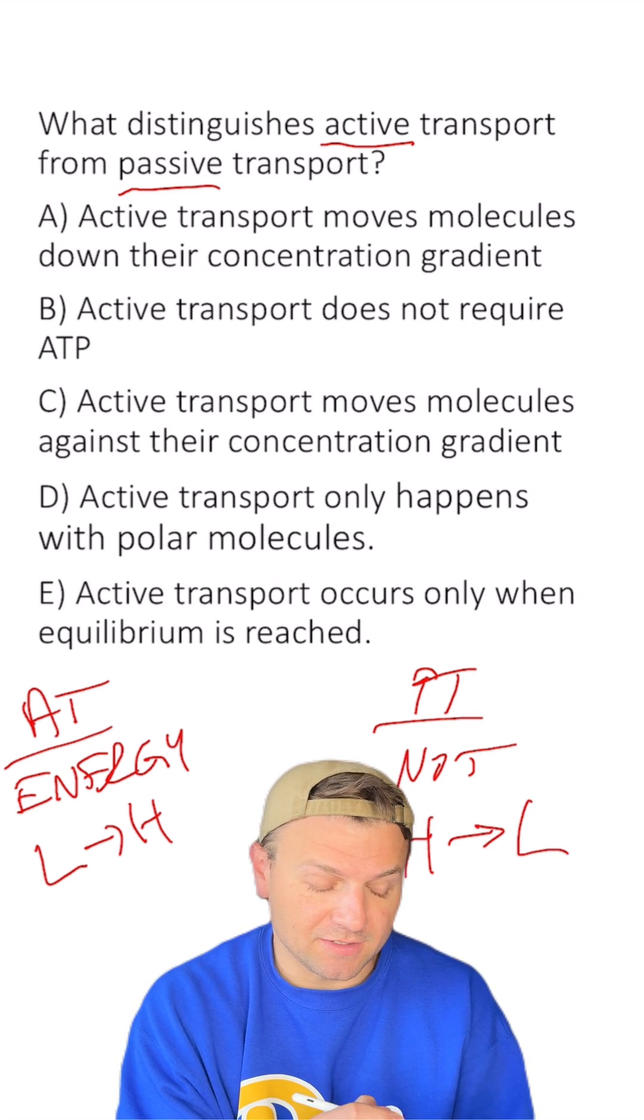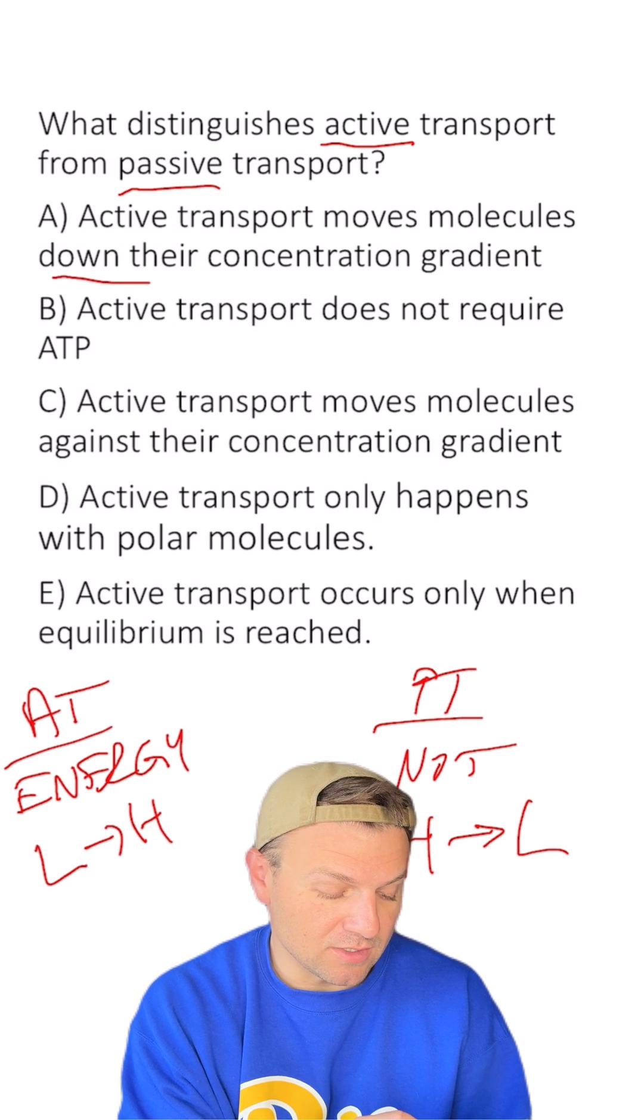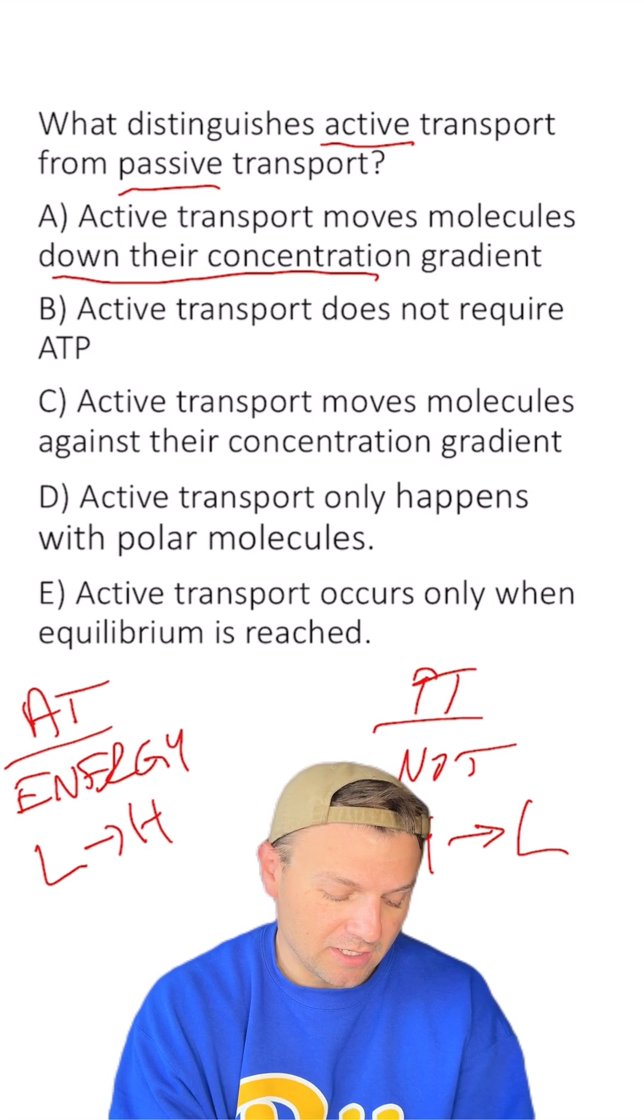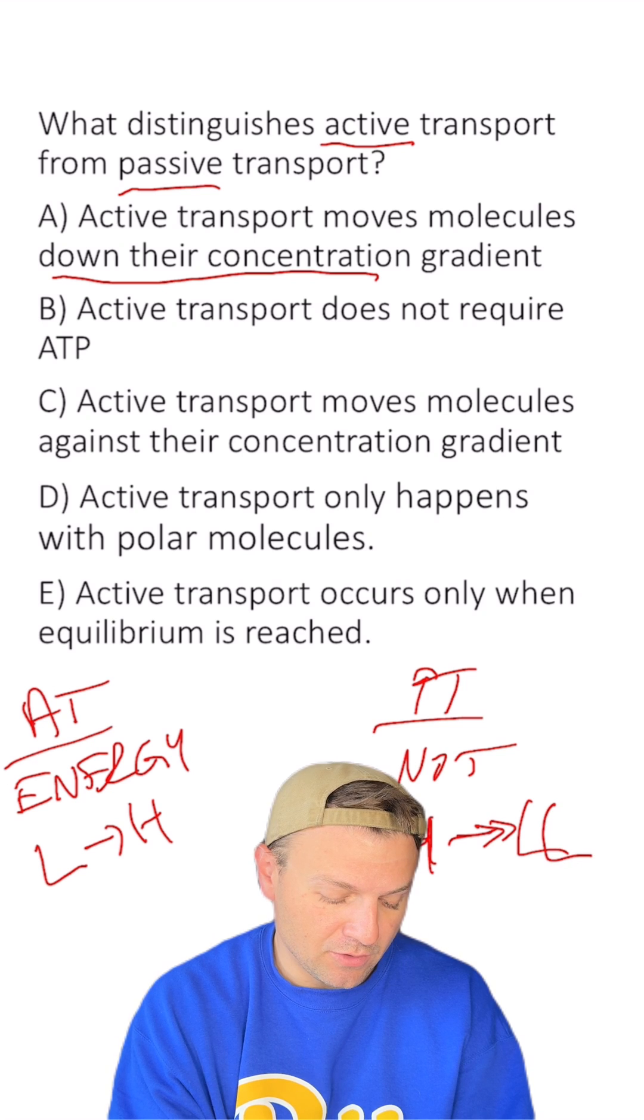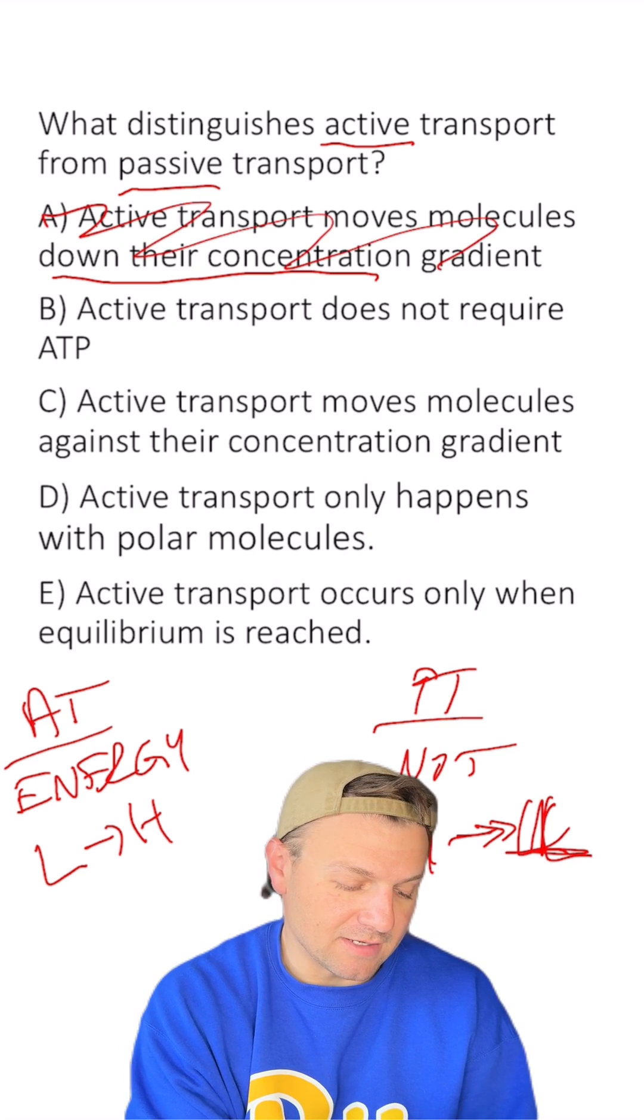So with that being said, let's look at our answers. A, active transport moves molecules down their concentration gradient. That means high to low. We're not looking for high to low. That means A is out.